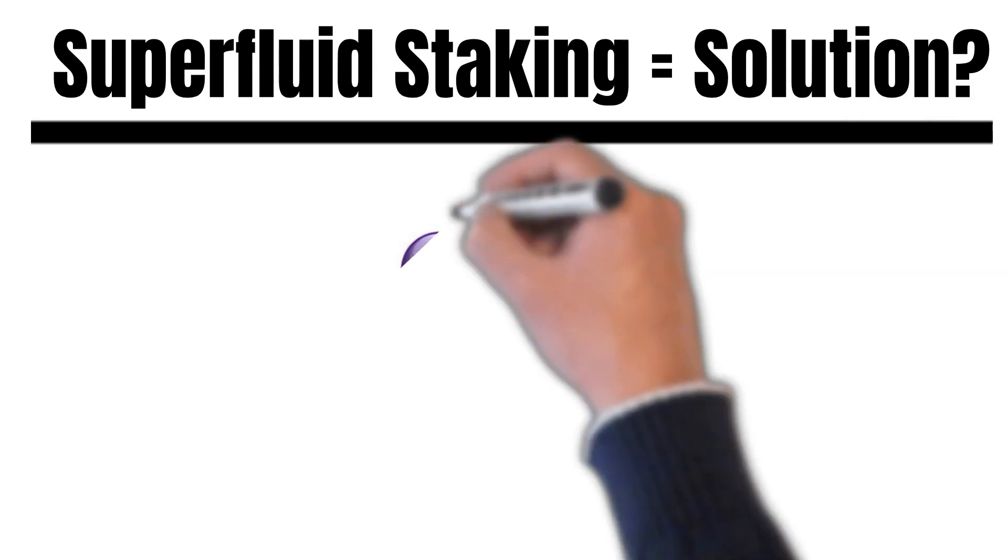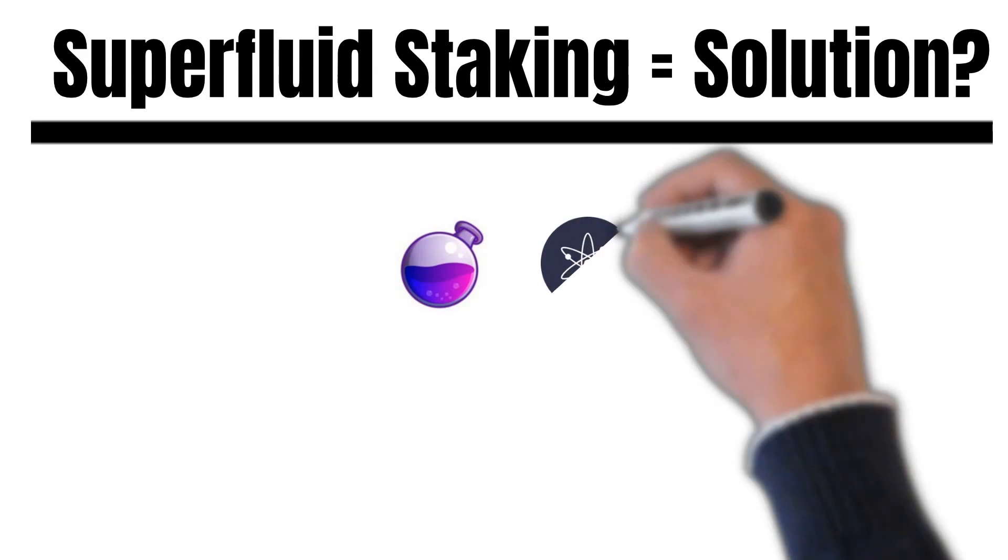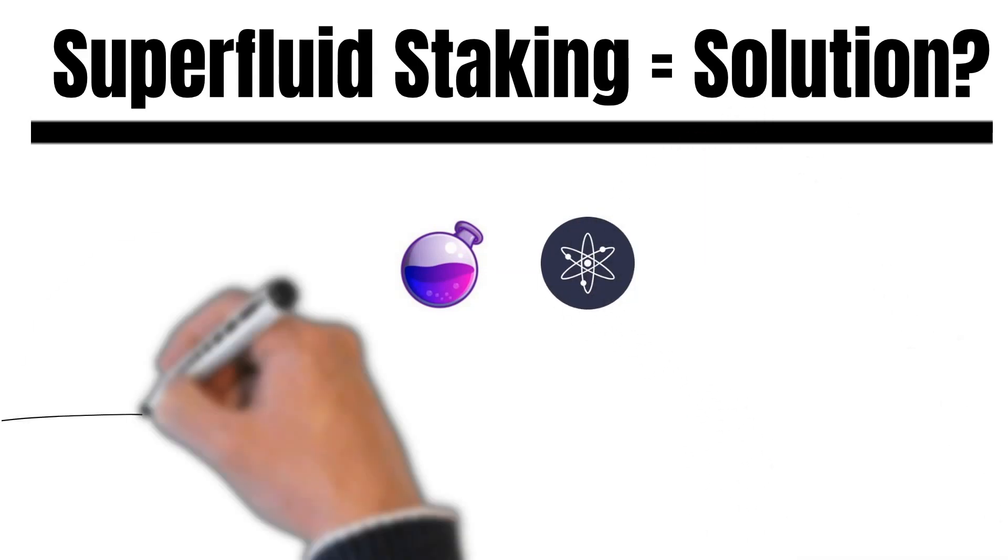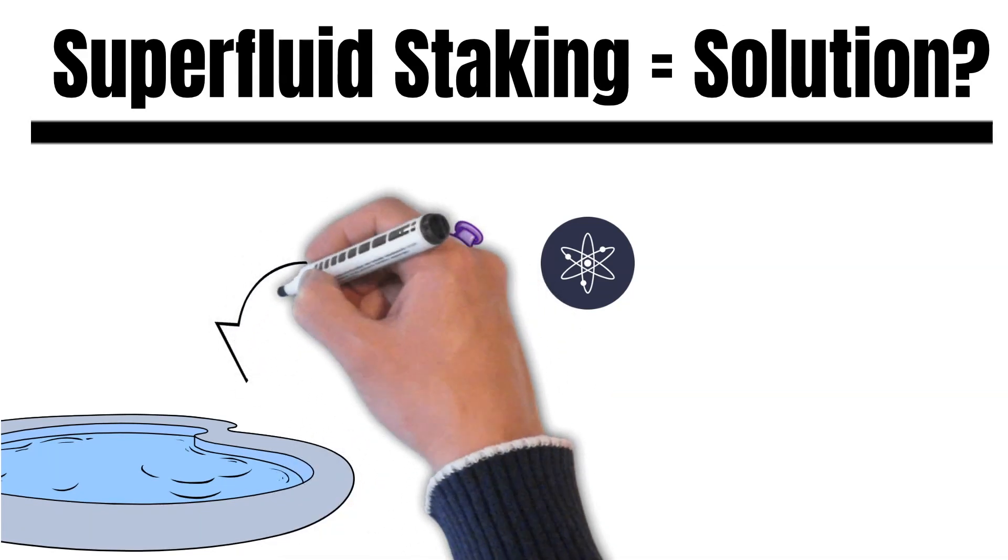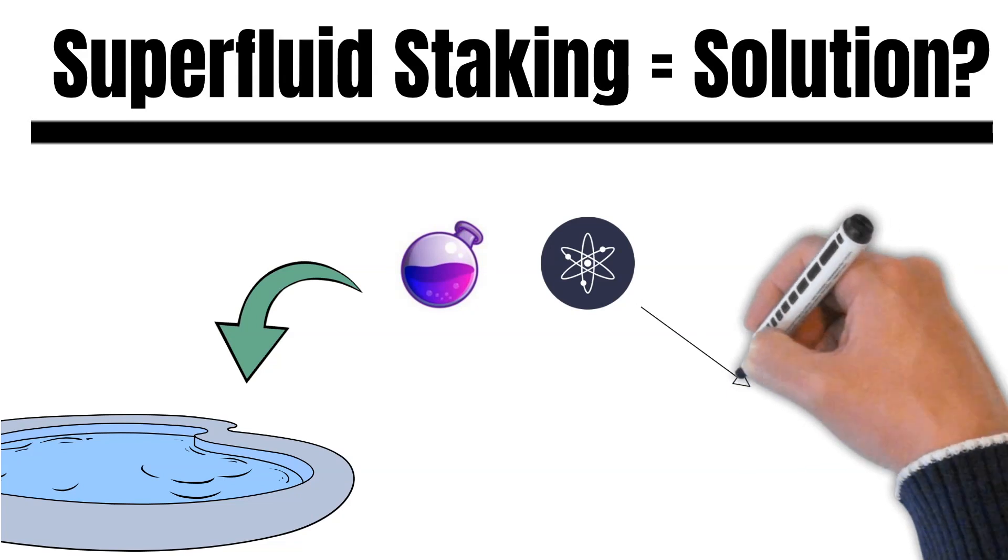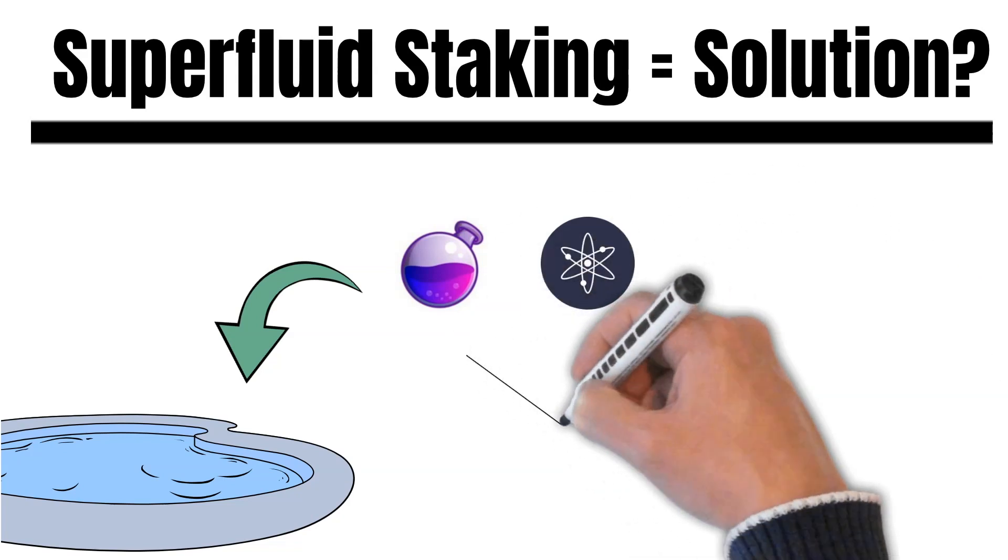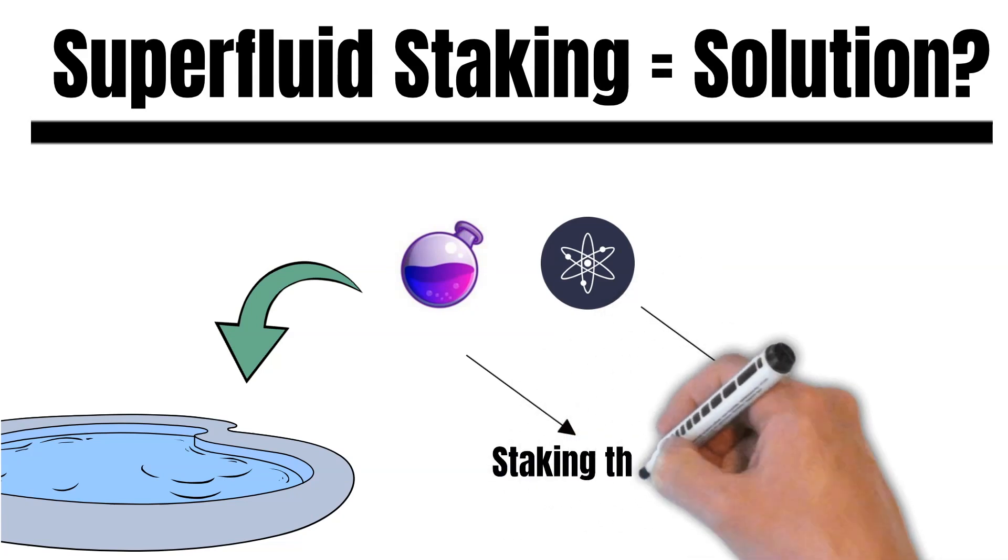Superfluid staking is basically the other way around. Instead of using a staking position in DeFi, users would provide liquidity, for example, for the Atom and Osmo pool, and stake the underlying asset. So, instead of using a staked position in DeFi, you stake the underlying asset of the pool you are providing liquidity for. This is much safer and achieves the same level of capital efficiency.